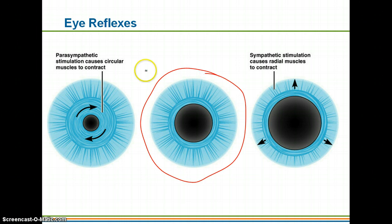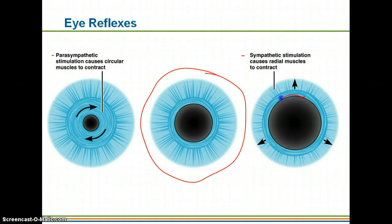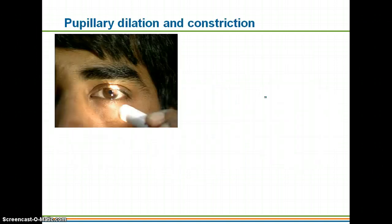This slide shows the eye reflexes in normal lighting. Parasympathetic stimulation — your rest-and-digest state — means you're not concerned about having very accurate vision, so the muscles in your iris are more relaxed, causing the pupil to shrink in size. With sympathetic nervous system activation — your fight-or-flight response — you want the best, most detailed vision possible, so your pupils will actually dilate, allowing more light in.